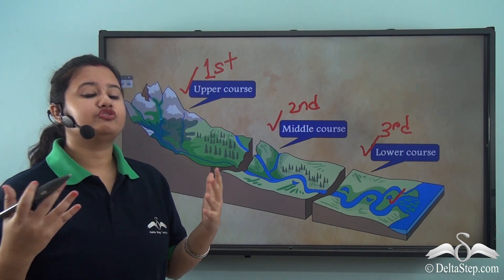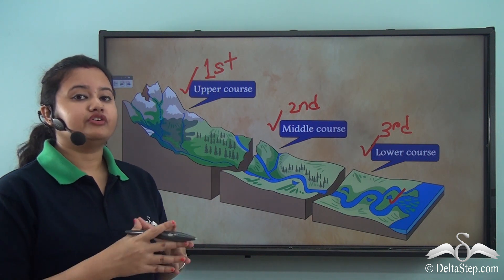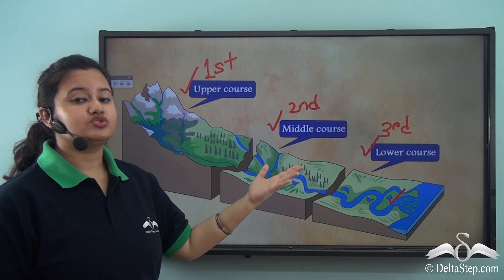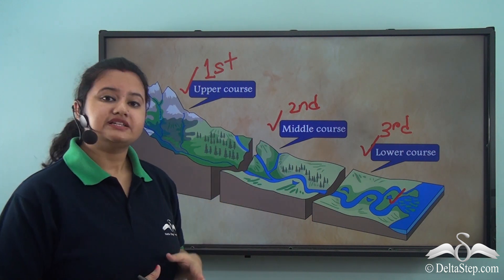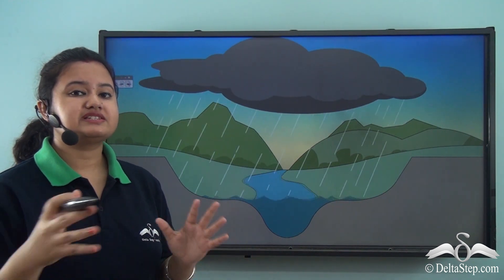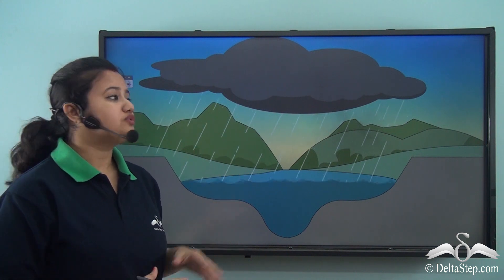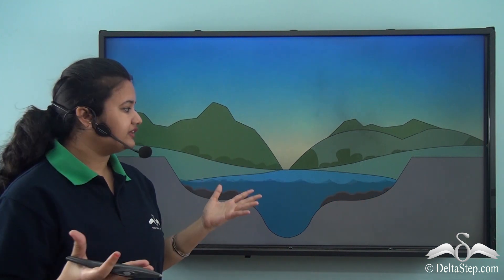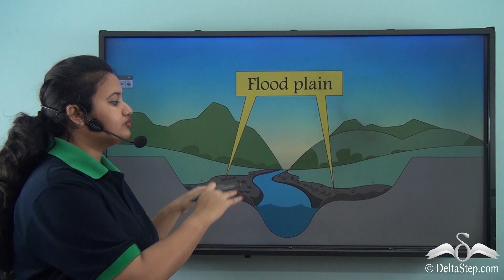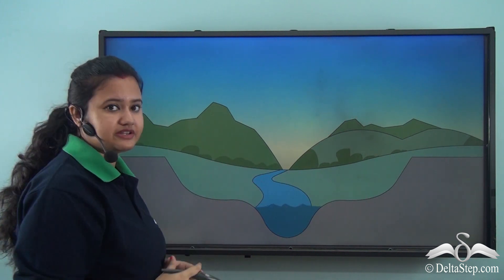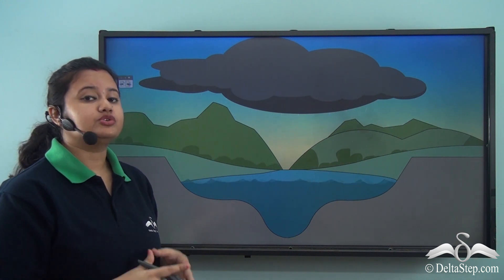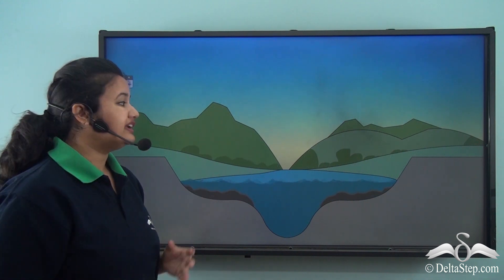Different types of plains are formed mainly in the middle and lower stages of a river. In the middle stage, the river's volume increases substantially. Due to heavy rainfall, the river overflows both its banks, leading to floods. As the river spreads over both sides of its bank, it deposits sediments there, leading to the formation of flat plains. Therefore, flood plains are formed due to deposition of sediments by a flooded river.